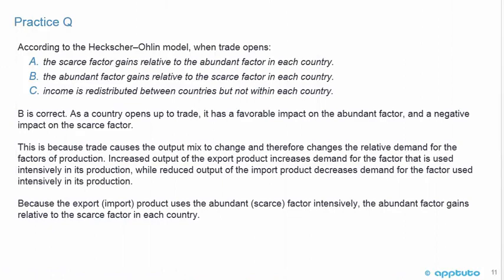B is correct. As a country opens to trade, it has a favorable impact on the abundant factor and a negative impact on the scarce factor. Trade changes the output mix and therefore changes the relative demand for factors of production. Increased output of the export product raises demand for the intensively-used factor, while reduced output of the import product decreases demand for its intensively-used factor. Because the export product uses the abundant factor intensively, the abundant factor gains relative to the scarce factor in each country. That's the last slide for this LOS.